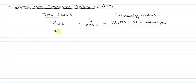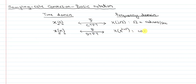Similarly, for discrete time signals we'll use square brackets, which will represent a discrete time signal. The Fourier transform — the discrete time Fourier transform — will be represented by X of e to the j omega, where the little omega has units of radians per sample.